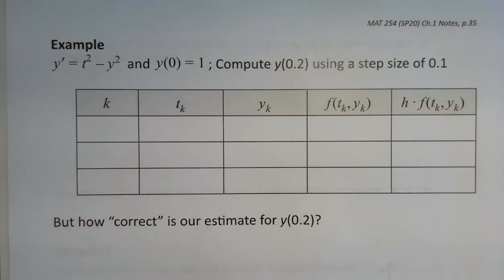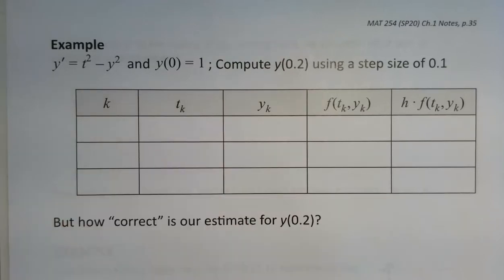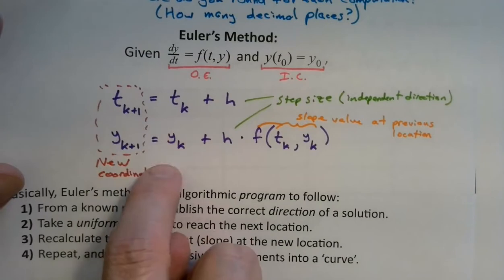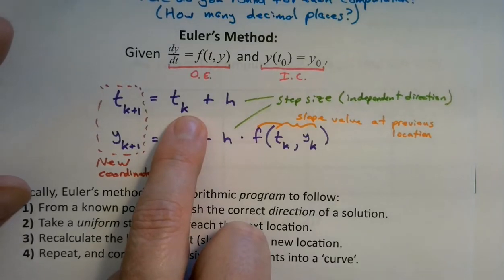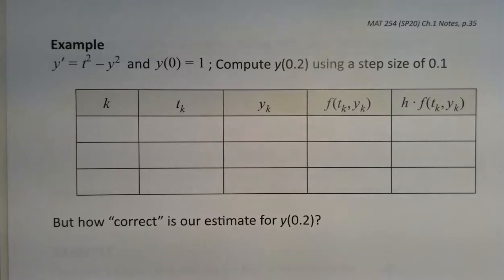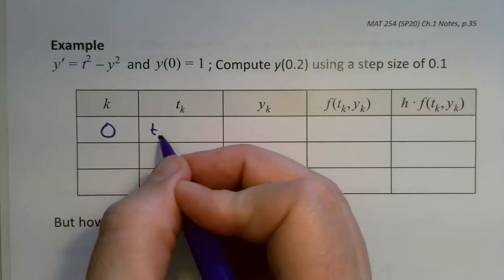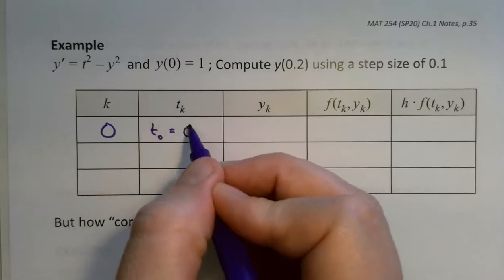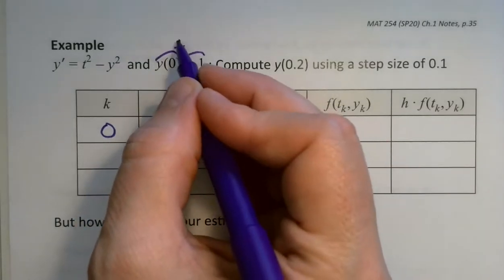A step size of 0.1 means we start at t equals 0, take one step to get to 0.1, and take two steps to get to 0.2. So this is a pretty quick problem. Filling in our table, we start with k values. The k value is just the index — it tells us where we are for the zeroth step, first step, and so on. Starting with k equals 0, our initial condition is t sub 0 equals 0 and y sub 0 equals 1.